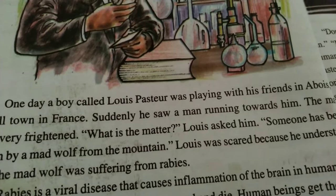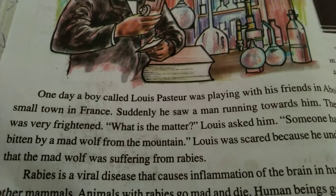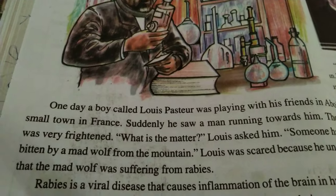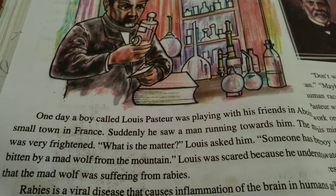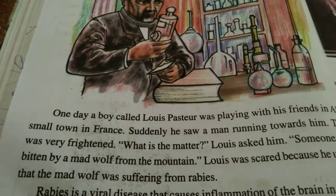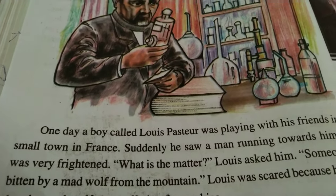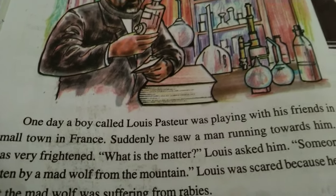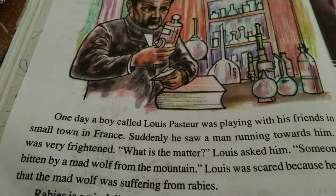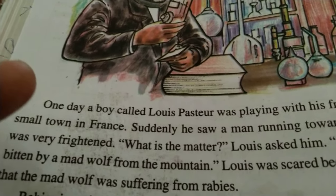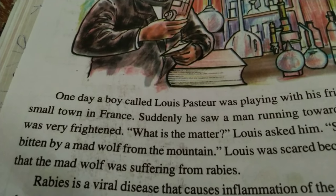One day a boy called Louis Pasteur was playing with his friends in a small town in France. Suddenly, he saw a man running towards him. The man was very frightened. Louis asked him, 'What is the matter?' Someone has been bitten by a mad wolf from the mountain. Louis was scared, because he understood that the mad wolf was suffering from rabies.